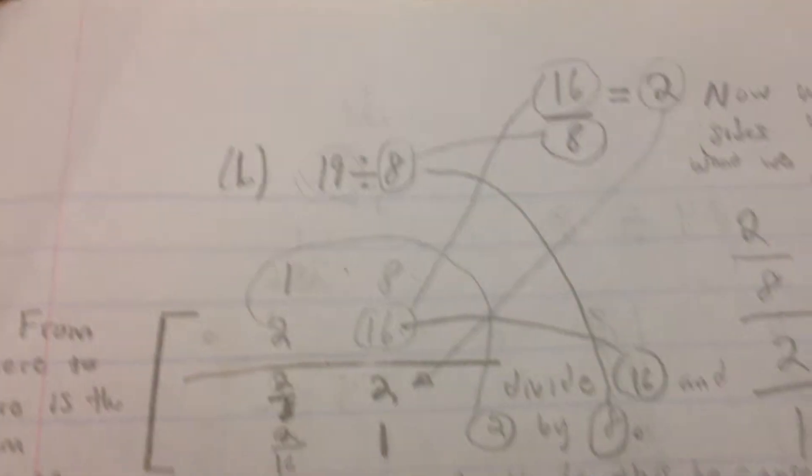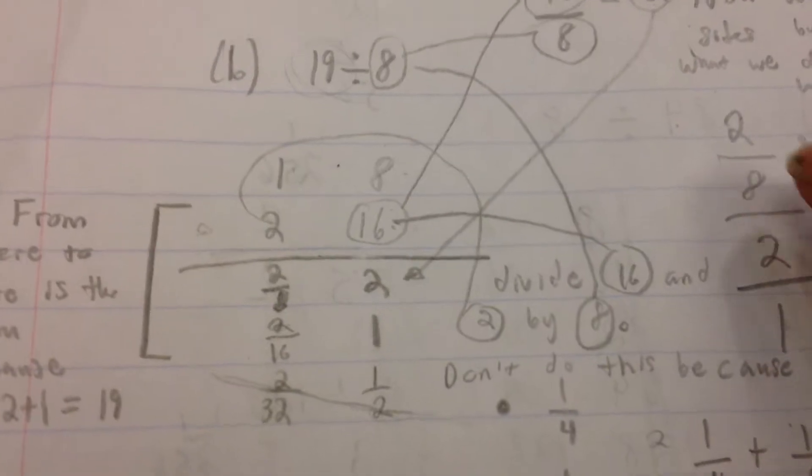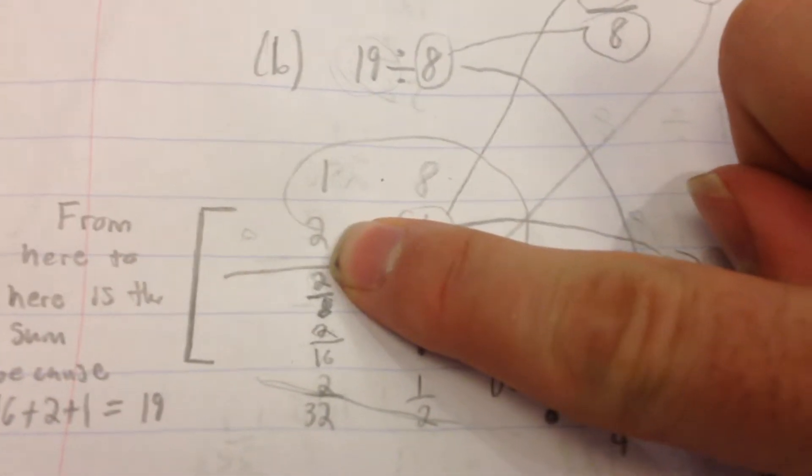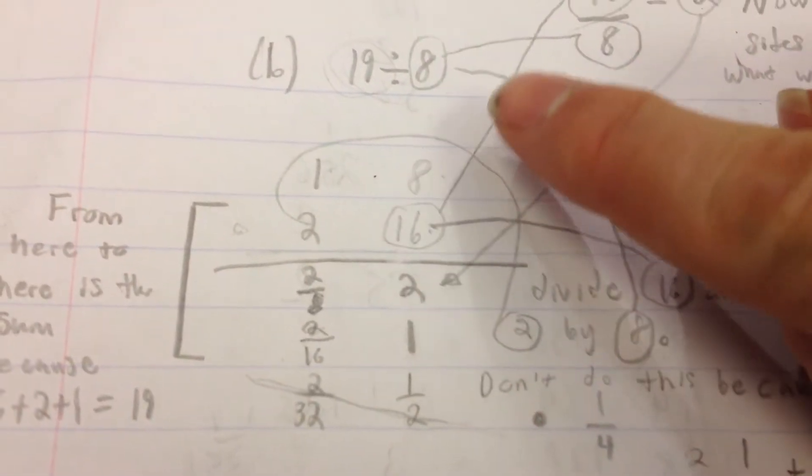So on the right column, we start out with 1, and then we double up to 2. But the reason we're going to stop there is because of the other column.